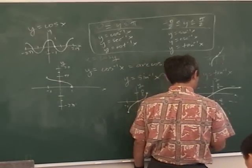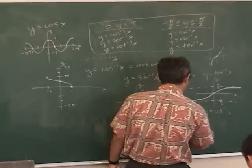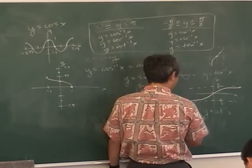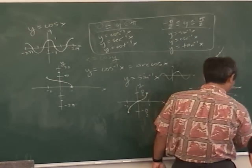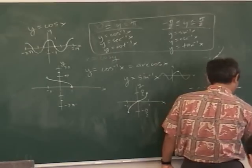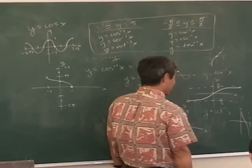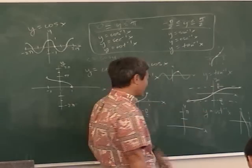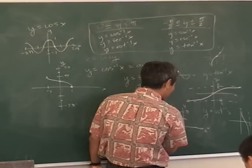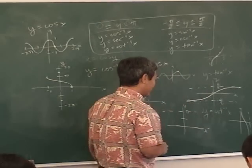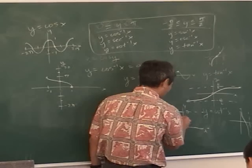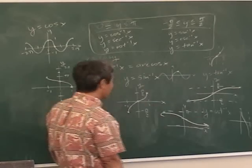What about cotangent inverse? The restricted range is zero to pi. Think of the regular cotangent graph — it goes from pi to pi with asymptotes, and slides down. All you do is switch all the x's and y's. So instead of x equals zero and x equals pi, you get y equals zero and y equals pi — horizontal asymptotes. And since the original graph comes down, the inverse also comes down.